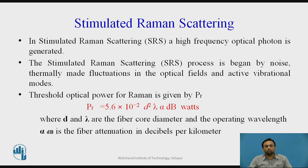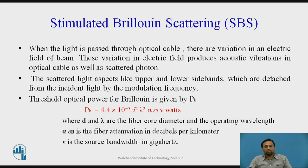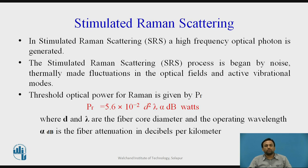Stimulated Raman Scattering (SRS) is similar to SBS but involves a high-frequency optical photon. The process begins with noise and thermally-driven fluctuations in the optical field and active vibrational modes. The threshold optical power for Raman scattering is: P_R = 5.6 × 10⁻² × d² × λ × α_dB watts, where d is fiber core diameter, λ is operating wavelength, and α_dB is fiber attenuation in dB/km. If the Brillouin threshold is 1 mW, Raman scattering appears at at least 10 mW — a higher threshold power.